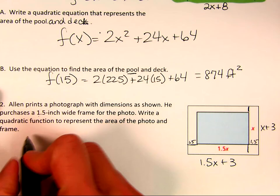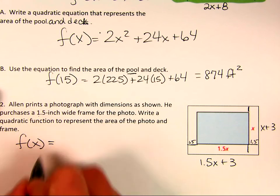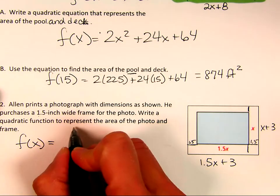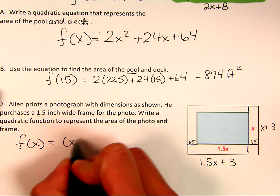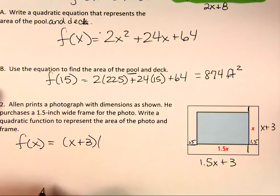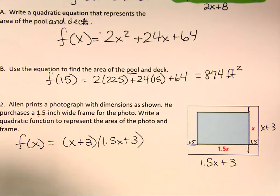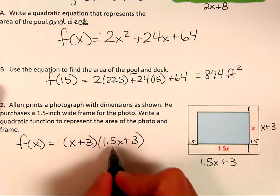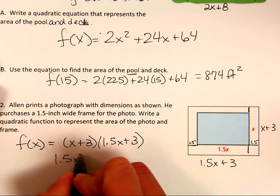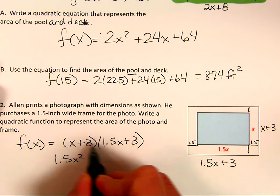So when I go to write my equation for the area of the total thing, I take base times height or length times width. So I'm going to take x plus 3 times 1.5x plus 3. And then we just multiply. So x times 1.5x is 1.5x squared.